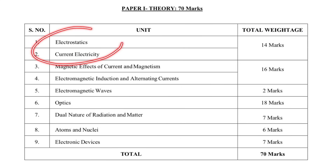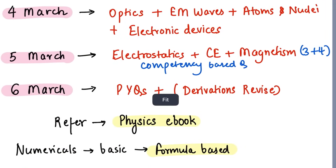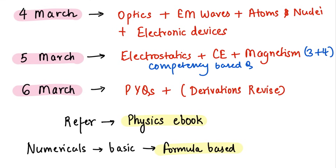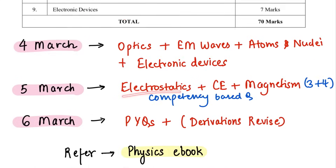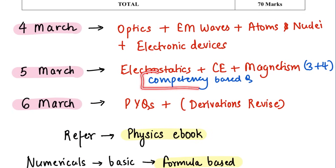In terms of weightage, these two chapters carry 14 marks, and optics carries 18 marks. Today, you should cover optics, electromagnetic waves, atoms and nuclei, and electronic devices — most of you might have started from yesterday, 3rd of March. On 5th of March, cover electrostatics, magnetic effects of current and magnetism, electromagnetic induction and alternating currents. You can also start with the competency-based questions available on the CBSE website.